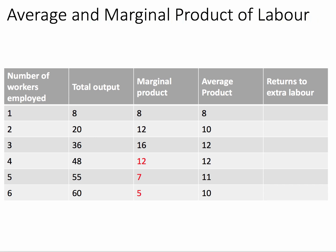Now what about the average product? The key is to understand that the marginal drives the average. The first worker has a marginal output of 8, so obviously the average is 8. The second worker adds 12, which drags the average up to 10 for the two workers. The third worker adds 16, dragging the average up to 12. The fourth worker just adds 12 — the previous average was 12, so the average stays at 12. But the fifth worker, with marginal returns now falling, can only add 7, which drags the average down from 12 to 11 across the five workers.